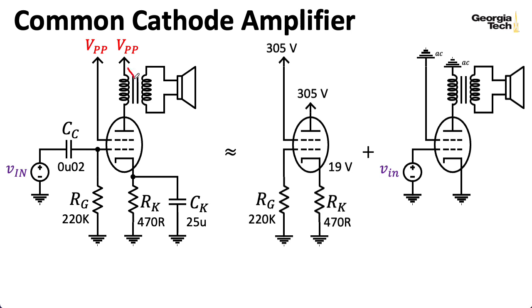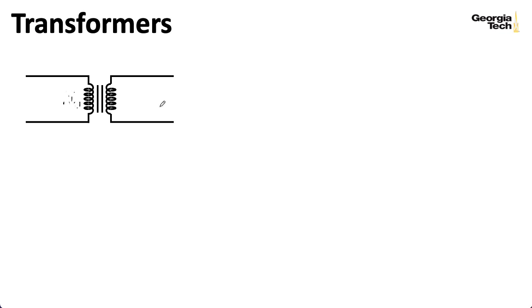So the side of the transformer connected to the tube is called the primary, and the side connected to the speaker is called the secondary. Let NP represent the number of turns of the primary coil, and NS represent the number of turns of the secondary coil. We'll define a voltage across the primary, and a voltage across the secondary, VP and VS.